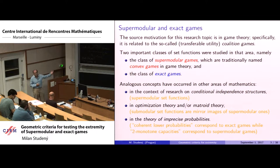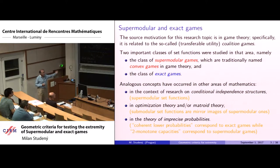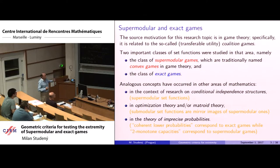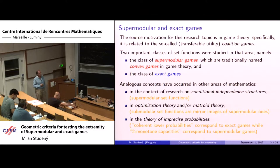Submodular functions, which are mirror images of supermodular ones, occur in optimization theory and matroid theory. There is also a theory of imprecise probabilities, about 30 years old, which introduces an additional level of uncertainty to probability theory by considering sets of probability distributions. In that framework, coherent lower probability corresponds to the concept of exact game, and two-monotone capacity corresponds to supermodular game.